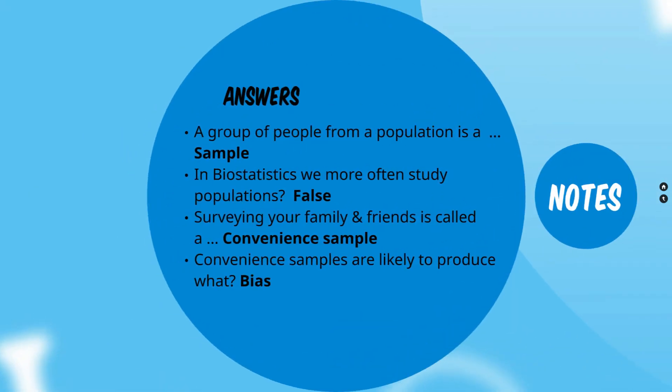A group of people from a population is called a sample. It's very difficult to capture data on an entire population, so we take a sample — a subset of that population. We'll try to take a random sample. In biostatistics, we more often study populations — this is false. It's difficult to study an entire population, so we often take samples. If you survey your friends and family, this is called a convenient sample, because they are convenient for you to sample.